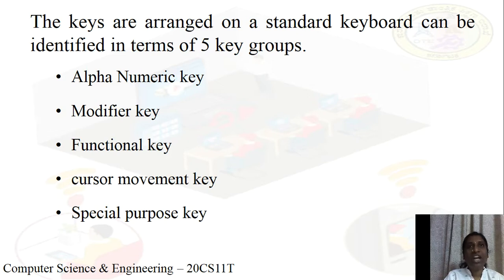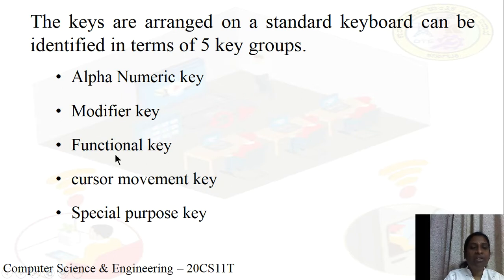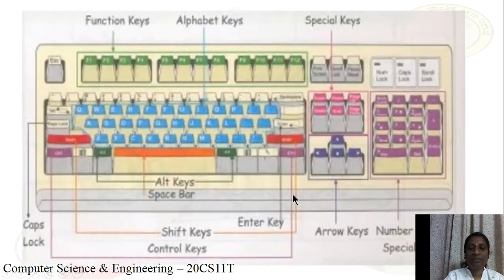Next we will see the working of the keyboard. The five different key groups arranged on the standard keyboard are: the alphanumeric keys, modifier keys, functional keys, cursor movement keys, and the specific purpose keys. This is the standard keyboard layout.